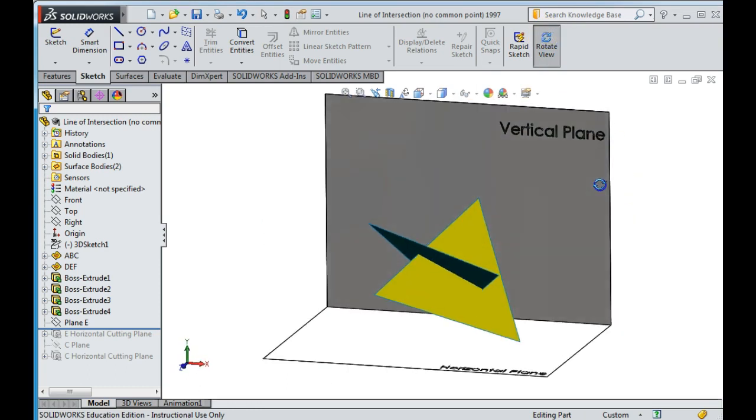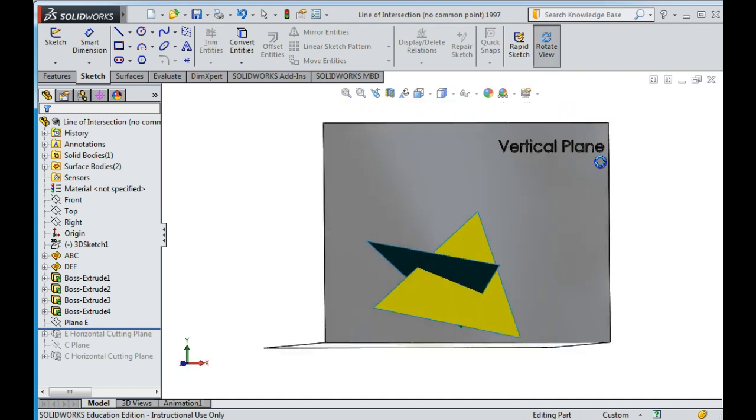I've put in a vertical plane and a horizontal plane for reference again. Now, I need to find a line of intersection.